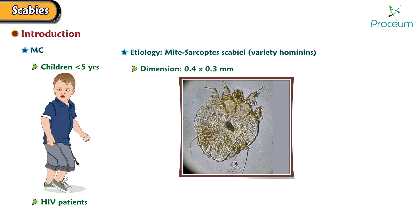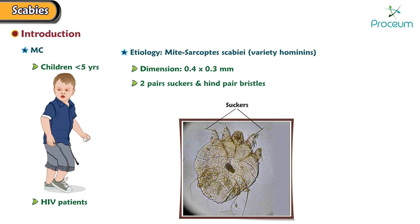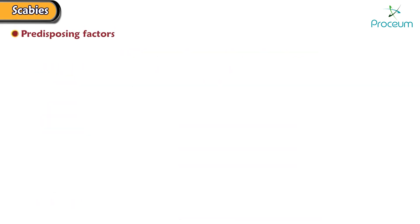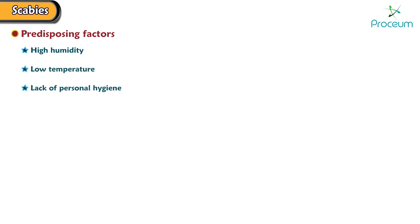The mite has a dimension of 0.4 to 0.3 millimeters. It has two pairs of suckers and hind-pair bristles. Predisposing factors of scabies are high humidity, low temperature, lack of personal hygiene, and overcrowding.